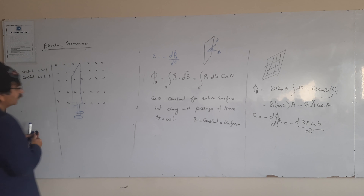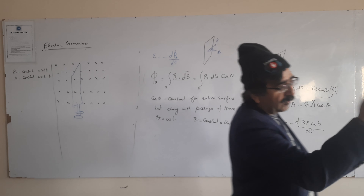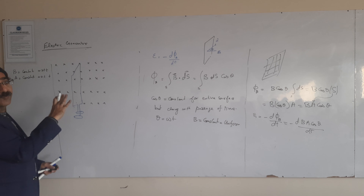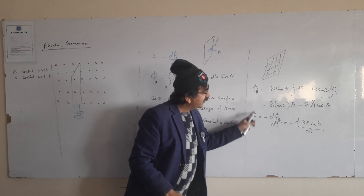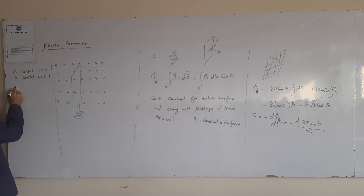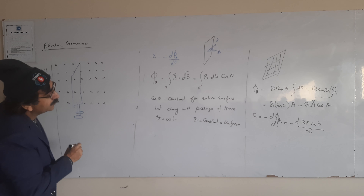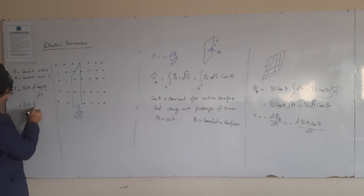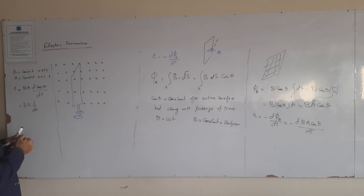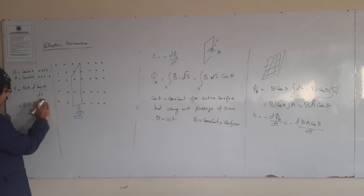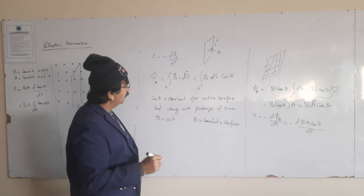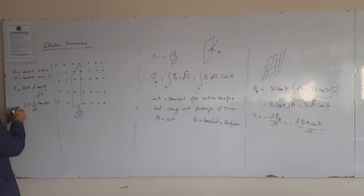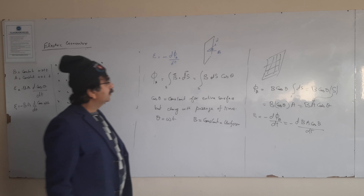Only the circuit is revolving, so the flux is changing — but the magnetic field is not changing. Therefore the electromotive force will be d/dt of [B·A·cos(theta)], which gives B·A·cos(omega·t), since theta equals omega·t.